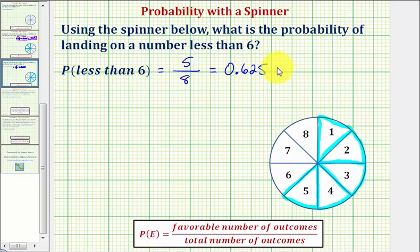And to convert to a percentage, we multiply it by 100 and add a percent sign, or move the decimal point to the right two places and add a percent sign, which would give us 62.5 percent.